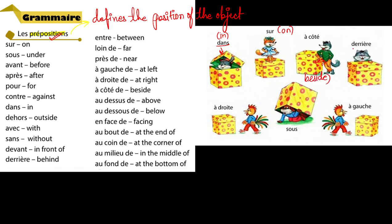Derrière means behind. Next is à droite, which means to the right — here is the box and it is to the right. Sous means under — it is under the box. And à gauche means to the left.